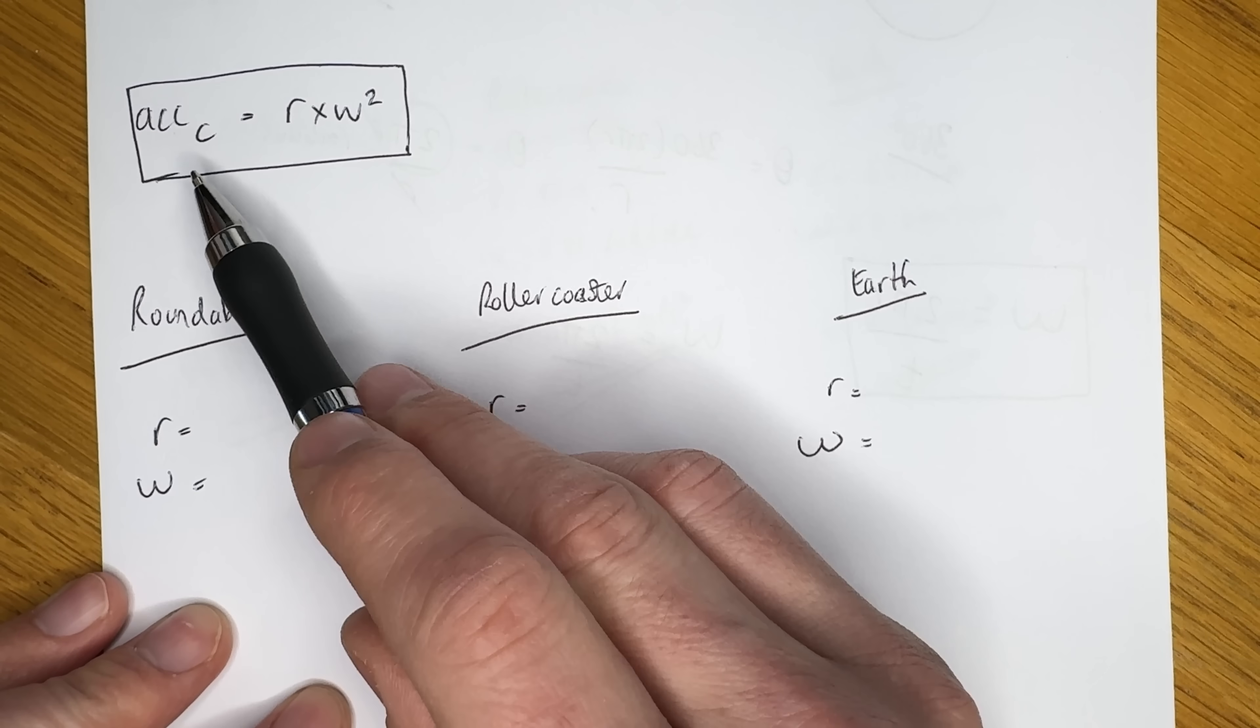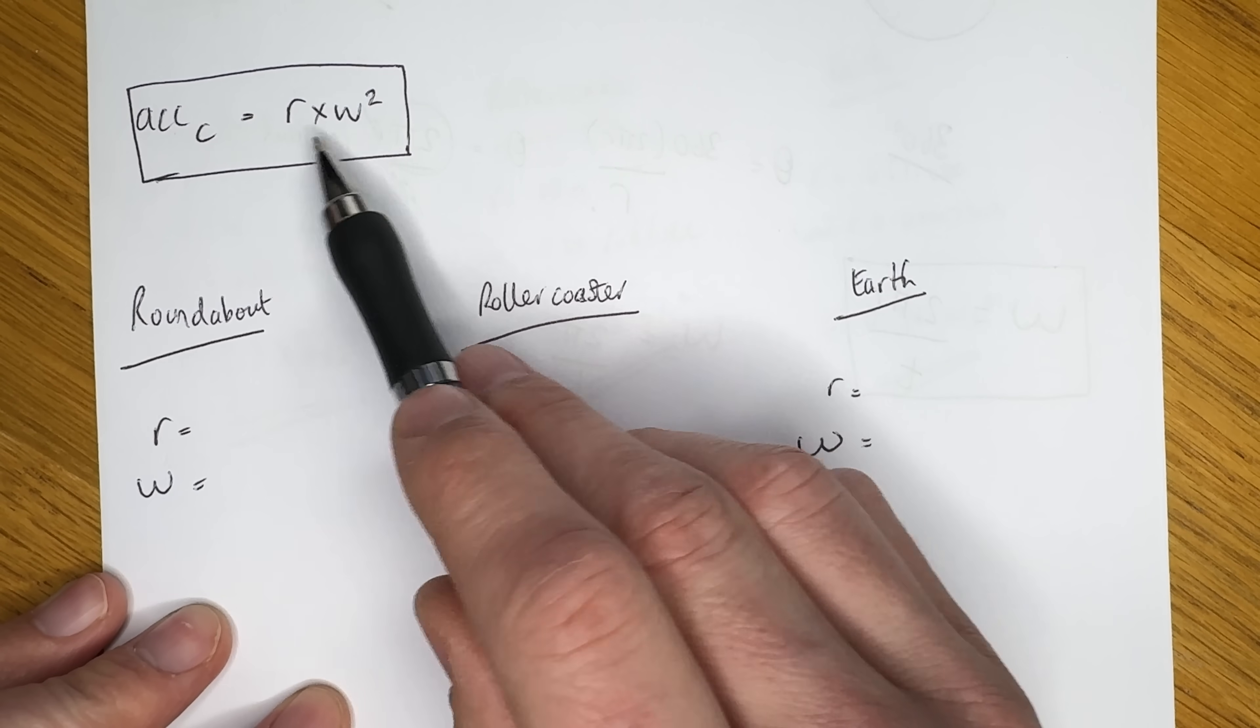Quite a conclusive result there, and as we can see, the Earth's angular velocity is a lot slower than that of the roundabout or the roller coaster. But that's not the end of it, because we don't actually feel that angular velocity, because it's constant. And it's not the angular velocity that we're really feeling on the roundabout or the roller coaster either. It's the centripetal acceleration. And for that, we can use the formula radius multiplied by omega squared.